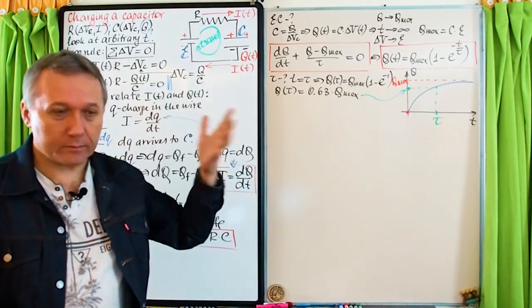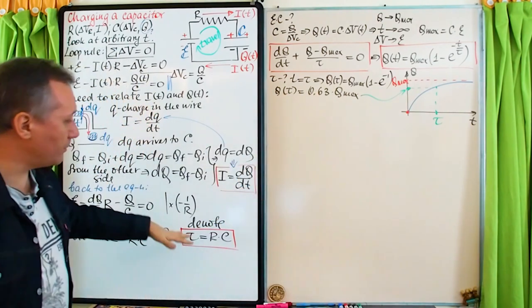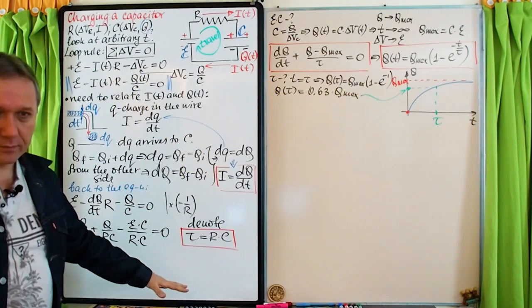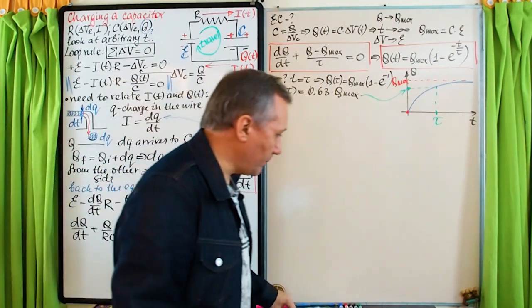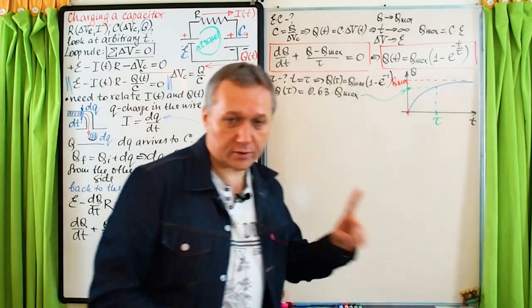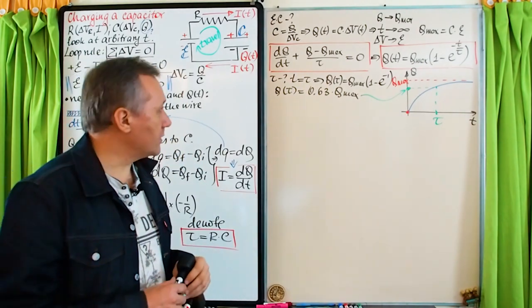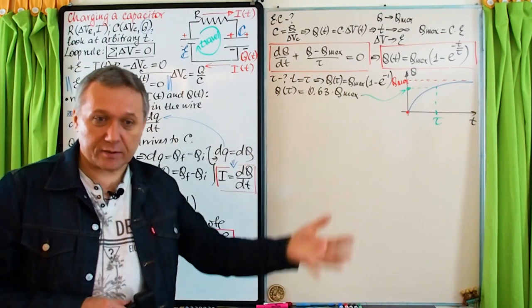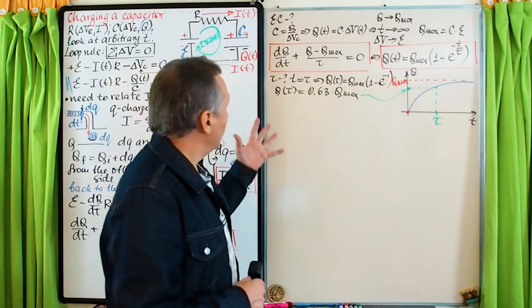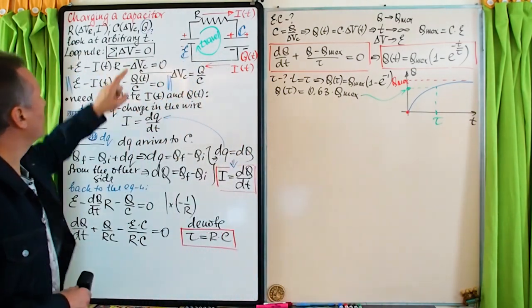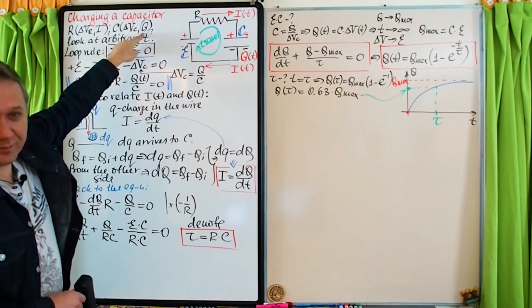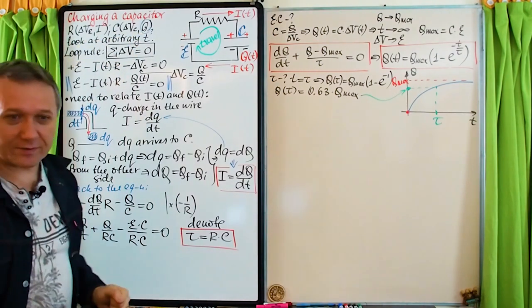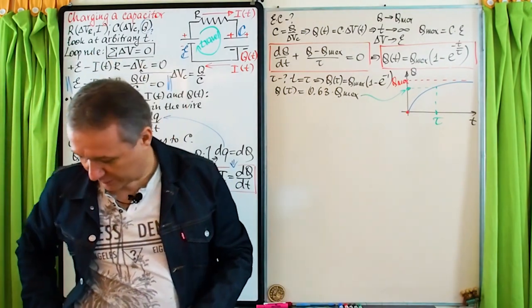Tau appears naturally during the derivation, and its meaning is just the moment of time when the charge in the capacitor reaches 63% of its maximum value. Now that we have Q(t), what about current and the potential differences across the resistor and capacitor?